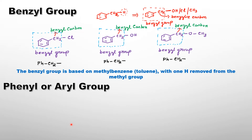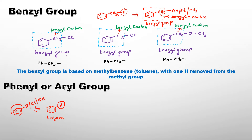Now let's understand the phenyl or aryl group. If you have a benzene molecule and you replace one hydrogen, you get a phenyl group. This hydrogen is replaced with any functional group — it may be R (any alkyl group), it may be any halogen such as chlorine, bromine, or iodine, or it may be OH. In that case, we don't call it benzene; we call it a phenyl or aryl group. Here you can see some examples.